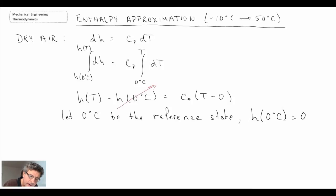What we end up with is the enthalpy of dry air. Notice the units: degrees C, kilojoules per kilogram degrees C, multiplied by temperature also in degrees C. So that is something a little different from what we've seen before.